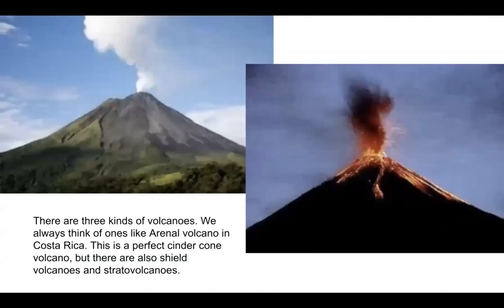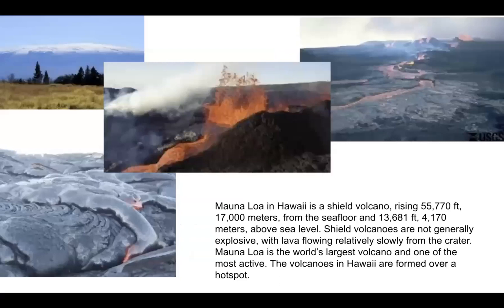We have three kinds of volcanoes. The first is what we call a cinder cone volcano — the perfect cone. A famous example from Costa Rica is Arenal, a perfect cinder cone. The other two kinds are shield volcanoes and stratovolcanoes. Mauna Loa in Hawaii is a shield volcano — kind of flat, like a shield someone would carry. You can see the snow-covered peak — even in Hawaii, it's so high that snow is on top. It's very flat and huge.